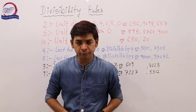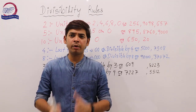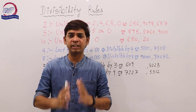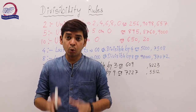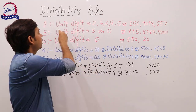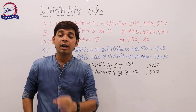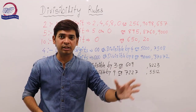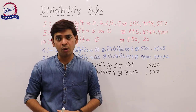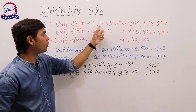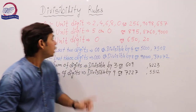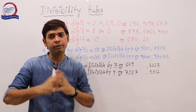First, divisibility rule of 2. A number is divisible by 2 if its unit digit is 2, 4, 6, 8, or 0. Unit digit means the last digit — the digit in the ones place. If that digit is 2, 4, 6, 8, or 0, then the number is exactly divisible by 2.